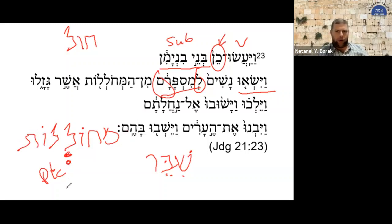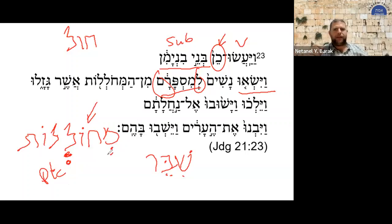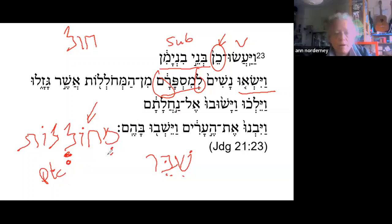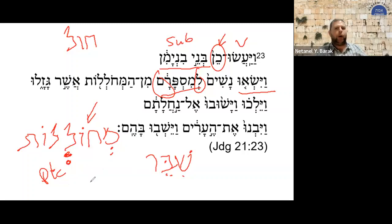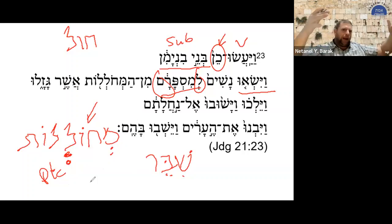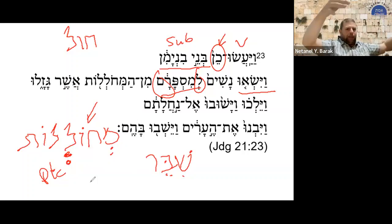To mark the feminine plural, we have the -ot at the end, because that is the feminine plural ending for nominal forms. Mecholelot — the participle declines like a noun. So mecholelot: it is a polel feminine plural participle. You can call it a pi'el, but it's a polel because the root is het-vav-lamed.